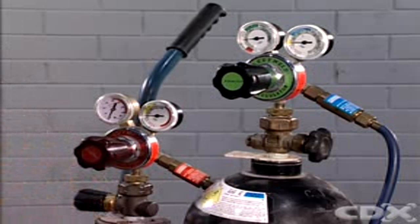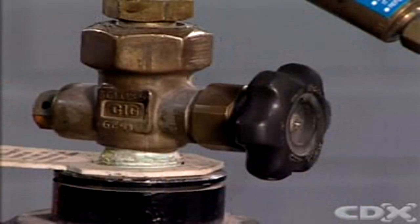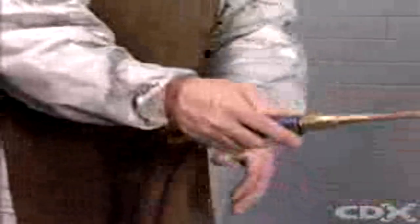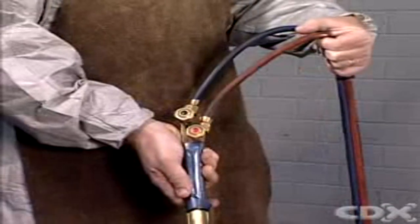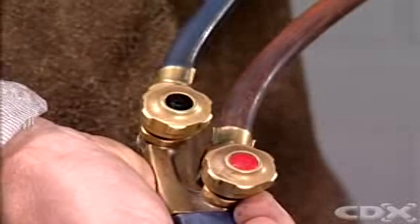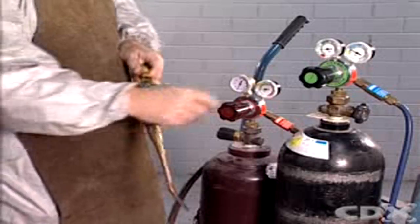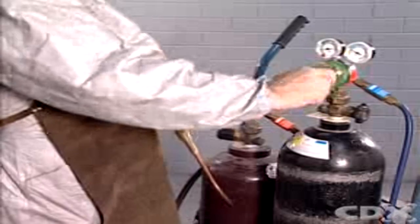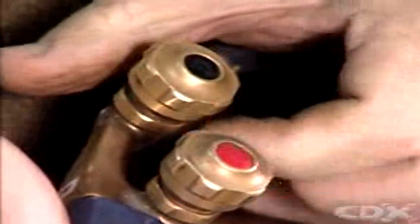Then you must purge the system of any gas. To purge the system, make sure the main cylinder valve is closed tightly. Pick up the torch handle and note that it has two hoses attached. One hose supplies acetylene, the other oxygen. Turn the oxygen regulator under the gauges clockwise and open the oxygen valve on the handle.